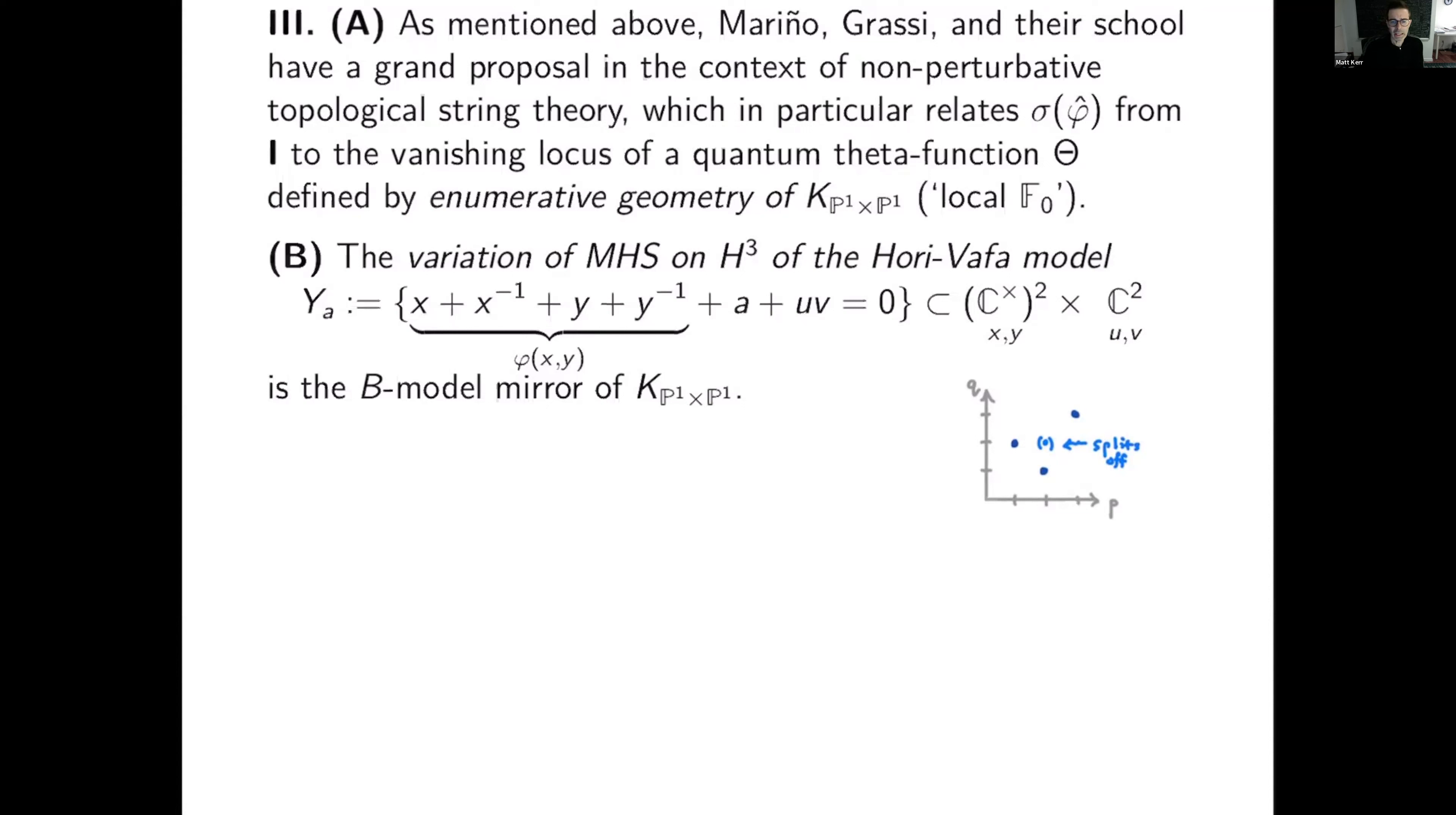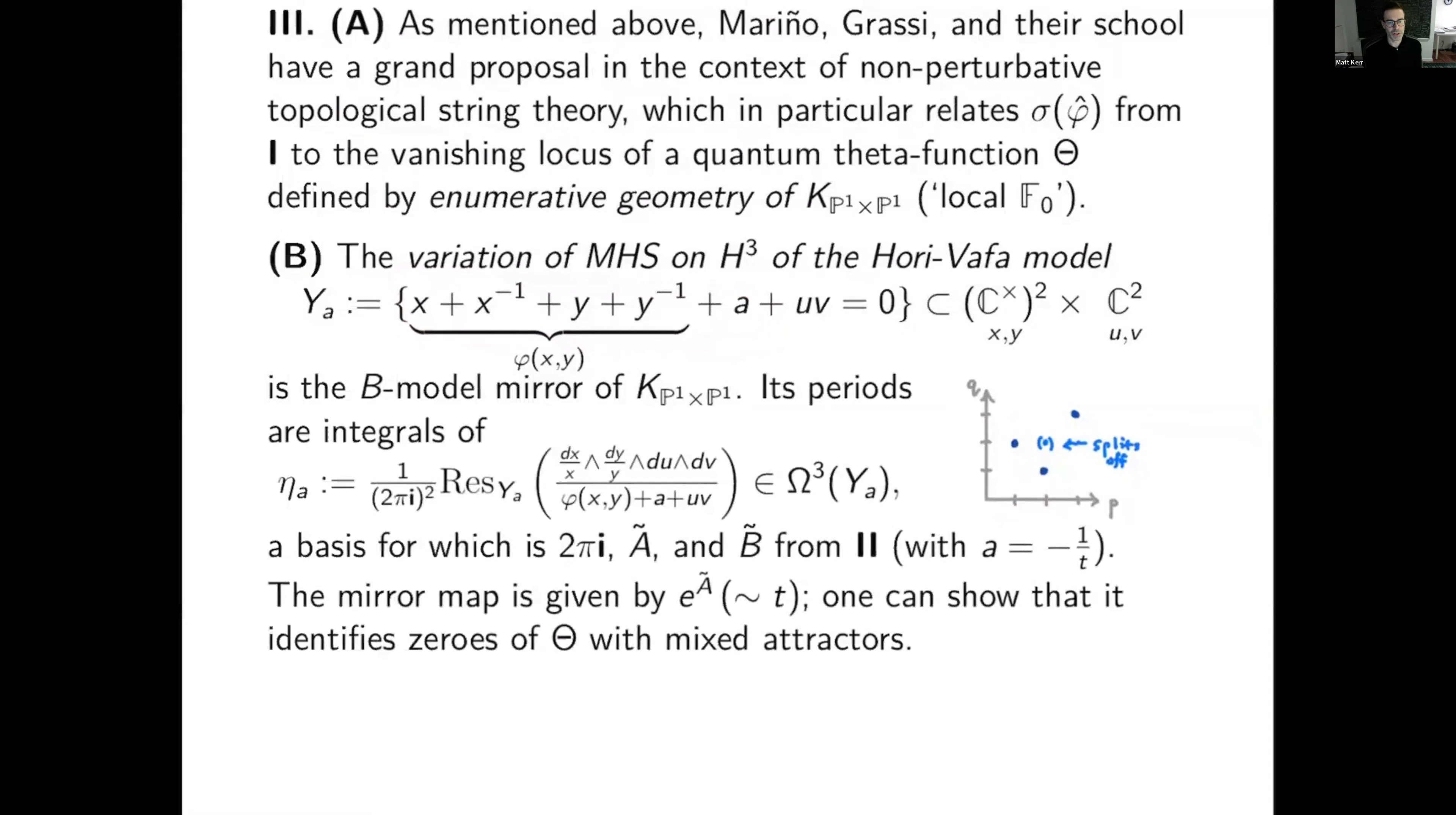And you think of this as some kind of one-dimensional conic bundle over G_m squared. And so it's a threefold. And the degeneracy locus of the conic bundle is exactly the level sets of the Laurent polynomial of phi. So phi plus a equals zero. And so what you get is you get an extension of mixed Hodge structure of this form. So this is the p and q types. In other words, there's a class of type 3,3. And there's the H1 of this elliptic curve twisted up by Q of minus 1.